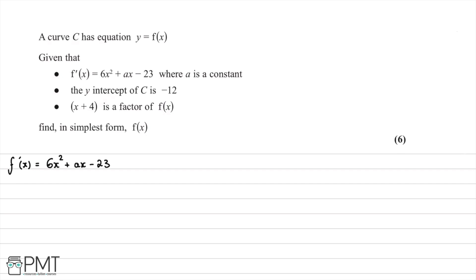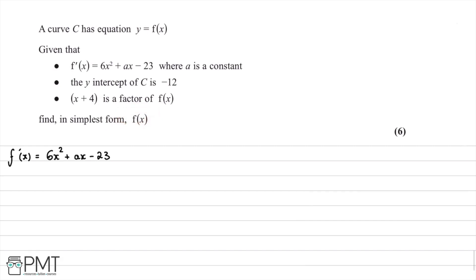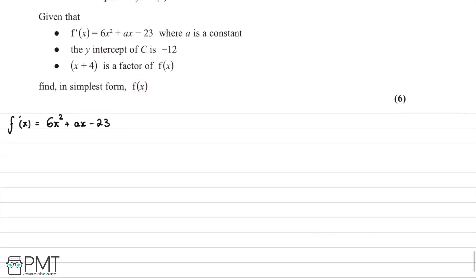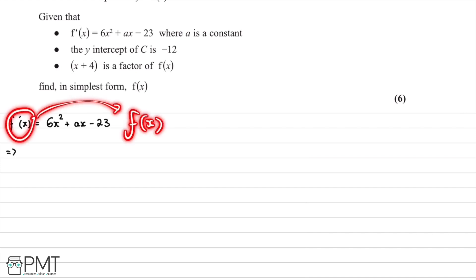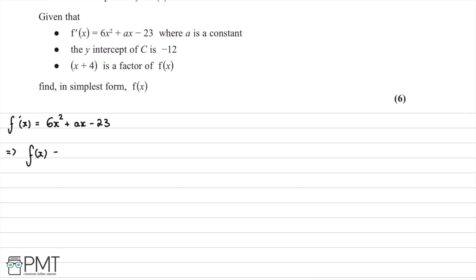We're asked to find f(x) in its simplest form. We write down that f'(x) = 6x² + ax - 23. To go from f'(x) to f(x), we are going to integrate, so f(x) is going to be equal to the integral of the derivative of f(x).